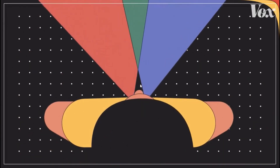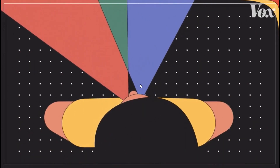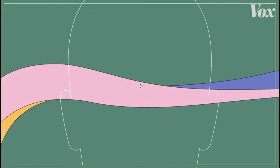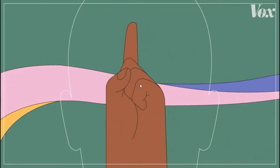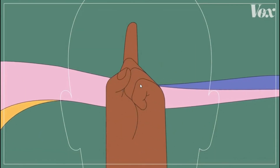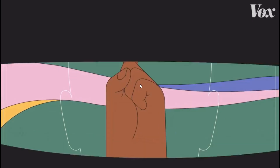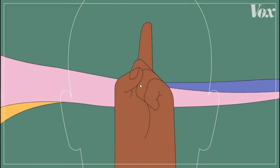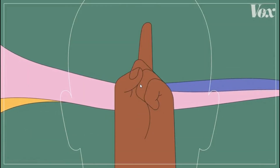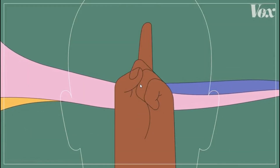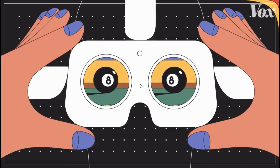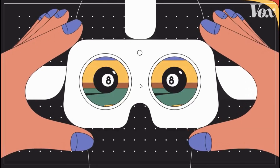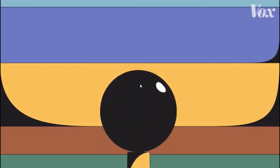Which is how our vision works in the real world — each eye takes a stimulus from a slightly different vantage point. You can test this: hold your finger up in front of your face and blink each eye. Your finger should jump back and forth. That jump is the difference between what your left and right eye are seeing, and that difference conveys depth. It conveys three dimensions.